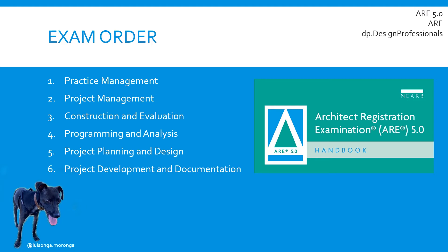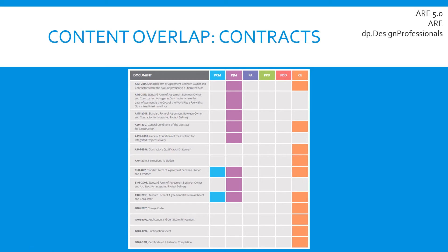To understand why I recommend this order, we need to look at the NCARB ARE 5.0 handbook — specifically the reference matrix at the very end. This particular page is the contracts section. The reference matrix shows all of the AIA contracts you need to know over all six exams, and which exams cover which contracts. Looking at the first two columns — Practice Management and Project Management — I recommend taking Practice Management first because it only covers two of the AIA contracts.